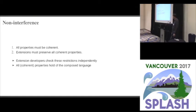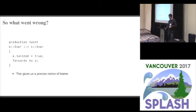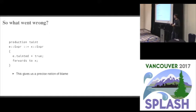Extension developers obey these restrictions independently, and then all the properties will stay true. Looking back at our example, we now have a precise notion of blame: it was the taint extension developer who wrote the taint annotation and said 'tainted is true here', but then forwarded to something where 'tainted' is actually false on that subtree. These are not equivalent trees — they have different semantics — and so that is not acceptable.